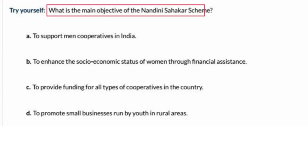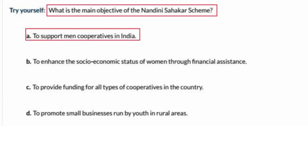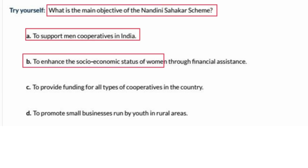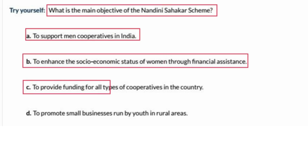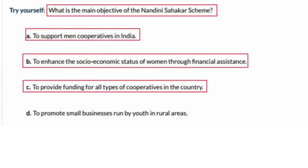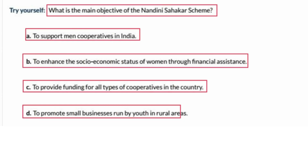What is the main objective of the Nandini Sahkar scheme? Option A: to support main cooperatives in India; Option B: to enhance the socio-economic status of women through financial assistance; Option C: to provide funding for all types of cooperatives in the country; Option D: to promote small businesses run by youth in rural areas. Please share your answer in the comment box.